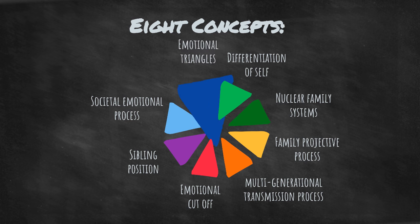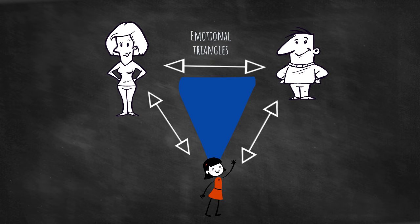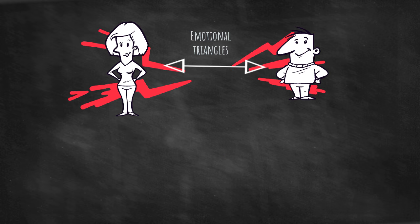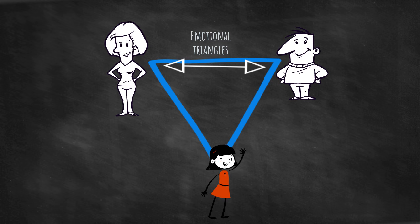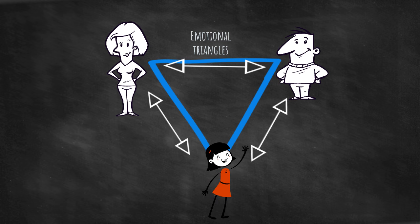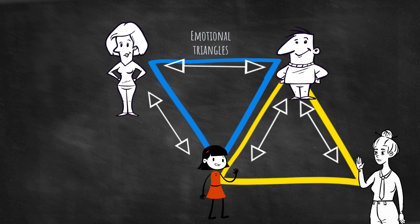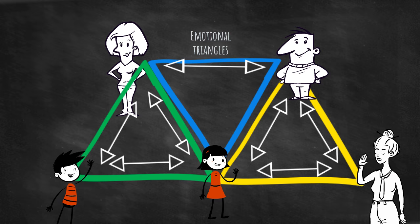A triangle is a three-person relationship system. It is considered the building block of larger emotional systems because the triangle is the smallest stable relationship system. A two-person system is unstable because it tolerates little tension before involving a third person. A triangle can contain much more tension without involving another person because the tension can shift around three relationships. If the tension is too high for one triangle to contain, it spreads to a series of interlocking triangles. Spreading the tension can stabilize the system, but nothing gets resolved.